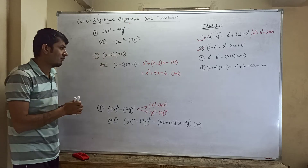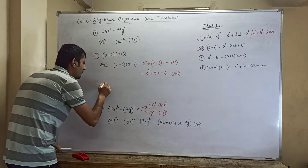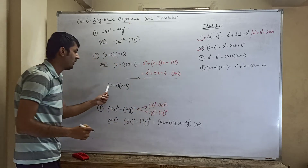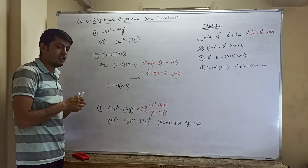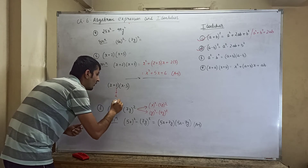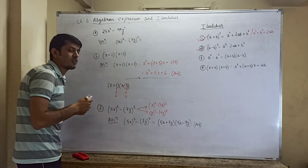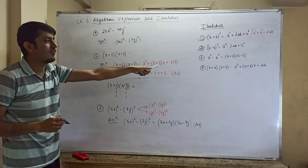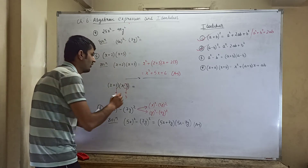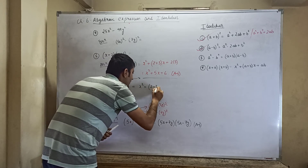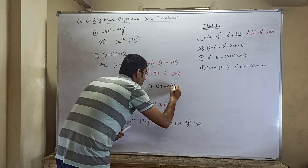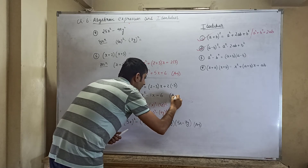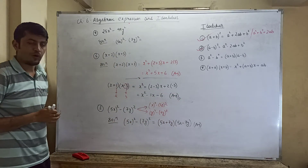Sometimes they may give a minus instead of plus. Suppose they give (x + 2)(x − 3). Here x is x, a is 2, and b is −3 (not just 3, it is minus 3). Using the same formula with b = −3: x squared plus (2 + (−3))x plus (2 × (−3)), giving x squared minus x minus 6. That is your required answer.